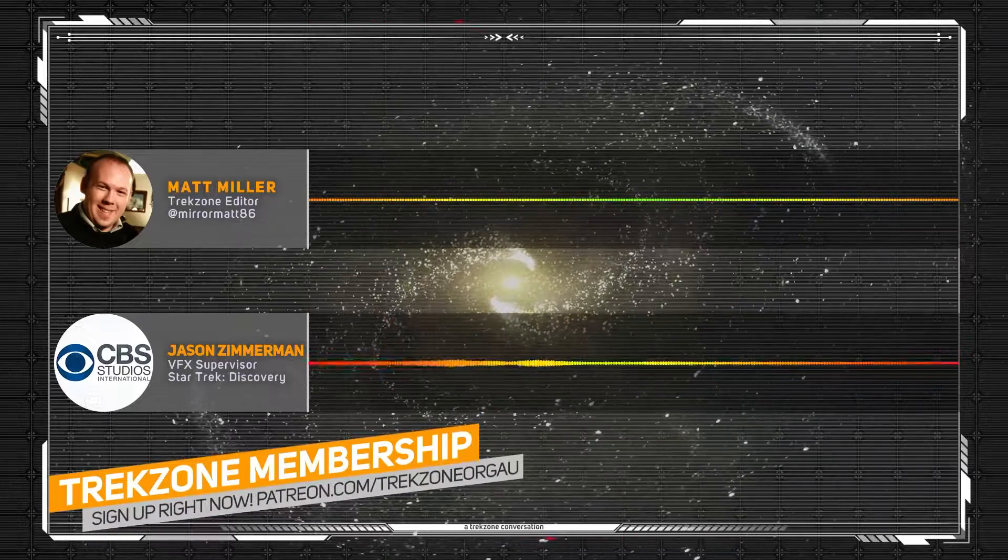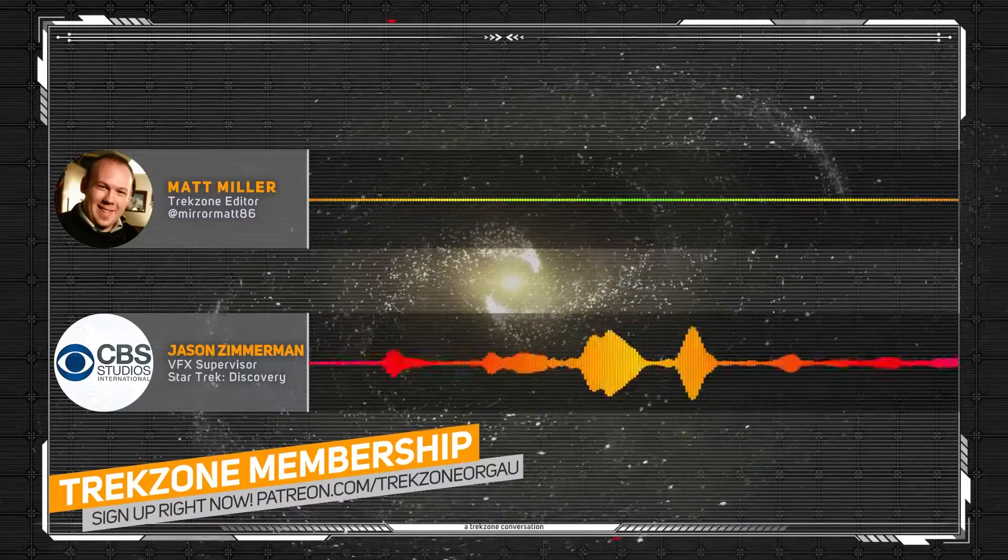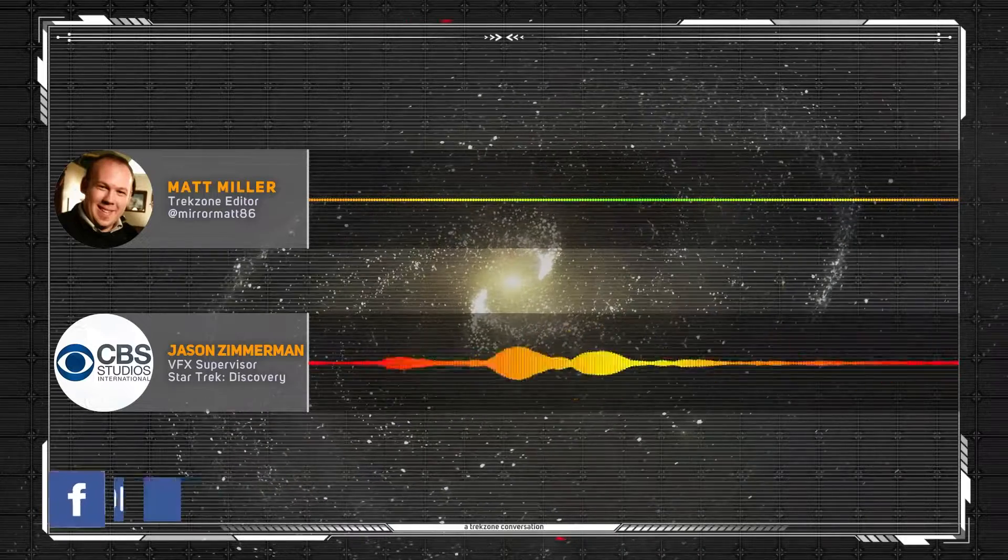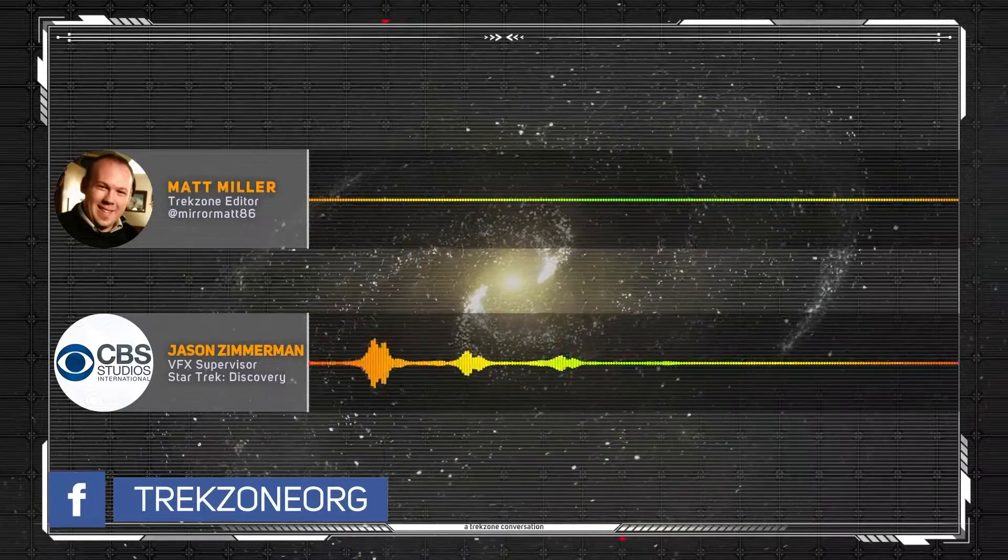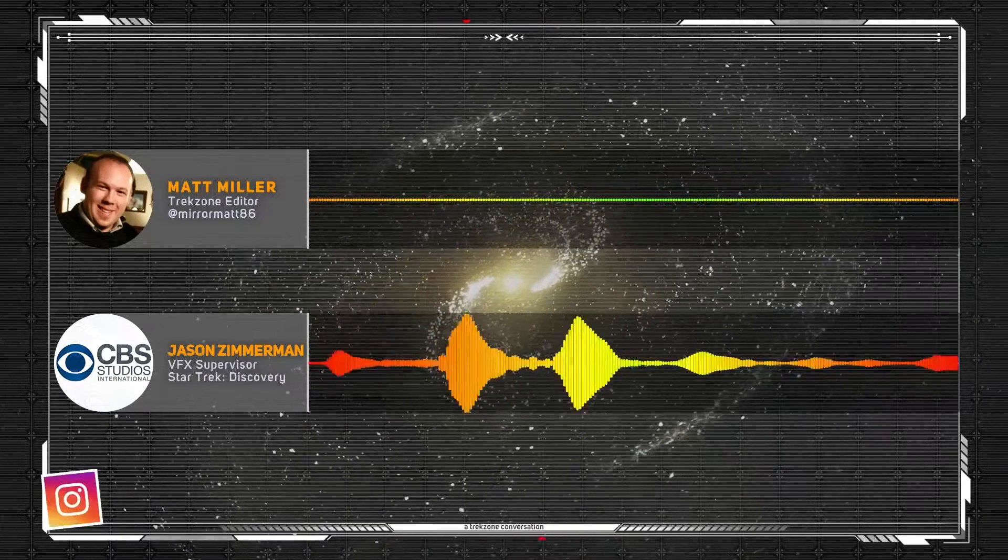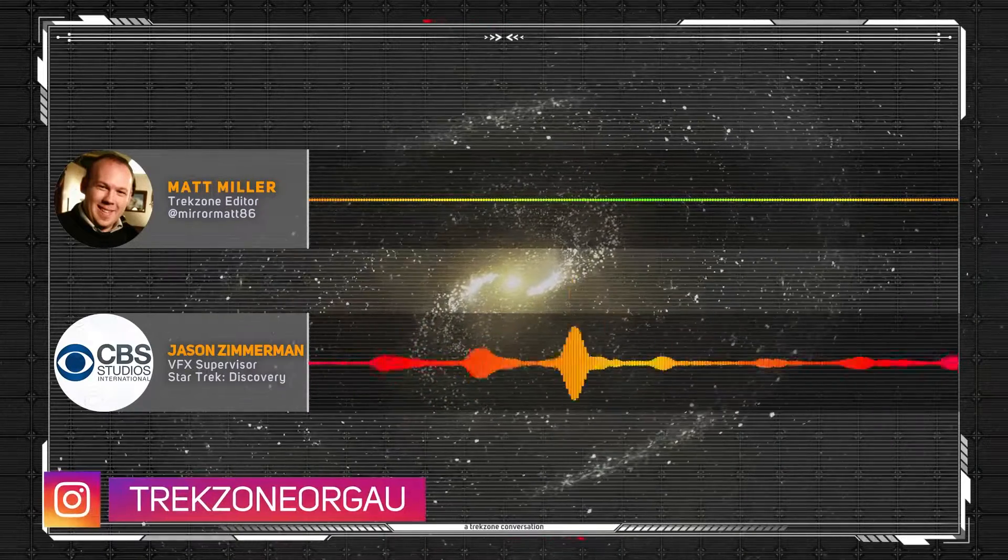You have both the shorter view of what episode is in front of you, like episode one. But then you have the overview of what's coming down the pipe and what assets and different things you need to start building and creating in order to service the episodes coming in the future. So it's really sort of just taking a multi-pronged approach.